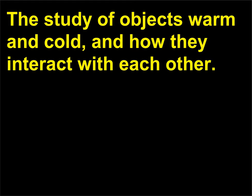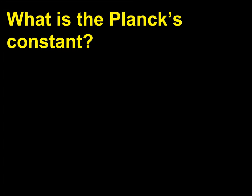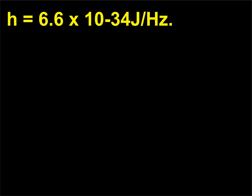What is Planck's constant? Planck's constant h = 6.6 × 10⁻³⁴ J/Hz.